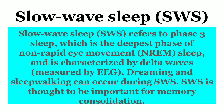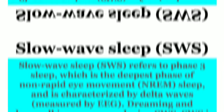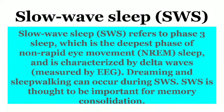Slow wave sleep refers to the phase 3 sleep, which is the deepest phase of non-rapid eye movement sleep, and is characterized by delta waves measured by EEG. Dreaming and sleepwalking can occur during SWS, i.e., slow wave sleep. Slow wave sleep is thought to be important for memory consolidation.